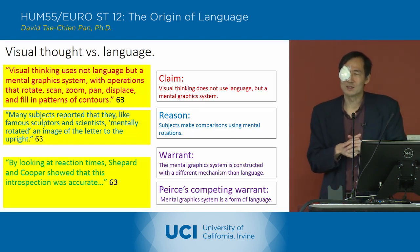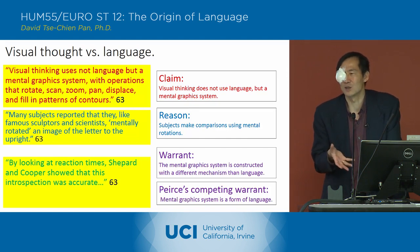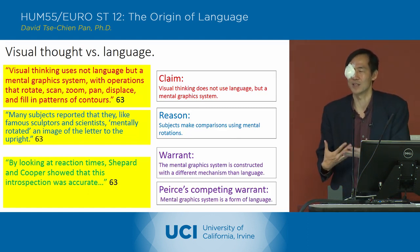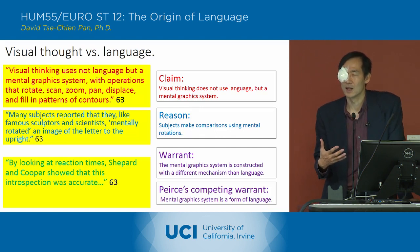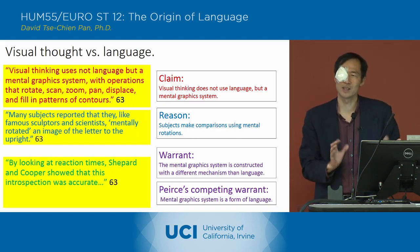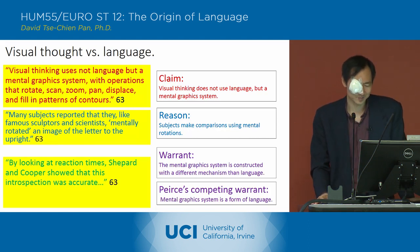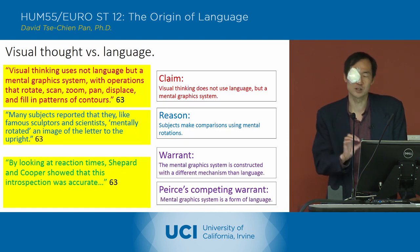Pinker is not indicating that this is a symbolic process. For Peirce, this mental graphics system is a kind of form of language to the extent that it's part of a symbolic system — the two shapes being compared are linked together with an interpretant, which he explains is a necessary part of every symbol. Pinker indicates the mental graphics system is constructed with a different mechanism than language, and that the thought process making the connection is independent of language and is not itself a symbolic system.